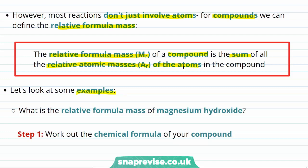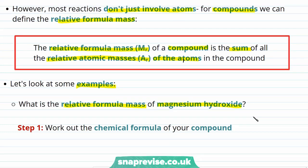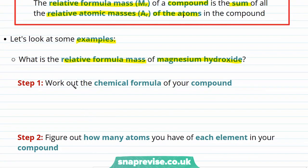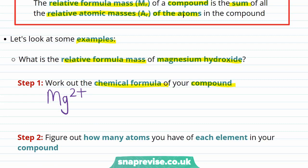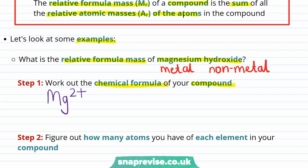For example, what is the relative formula mass of magnesium hydroxide? We're going to tackle this question in steps. The first step is to work out the chemical formula of the compound, which in this case is magnesium hydroxide. Magnesium is a group 2 metal and therefore has two electrons in its outer shell. In the formation, magnesium will lose these two outer shell electrons easily in order to form the Mg²⁺ positively charged ion. We can tell that we're going to be forming ions because magnesium hydroxide is a compound between a metal, magnesium, and non-metals, hydrogen and oxygen, in the hydroxide. The bonding between a metal and a non-metal is going to be ionic, which means that we need to form ions.